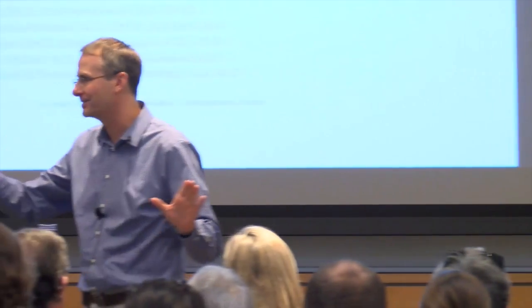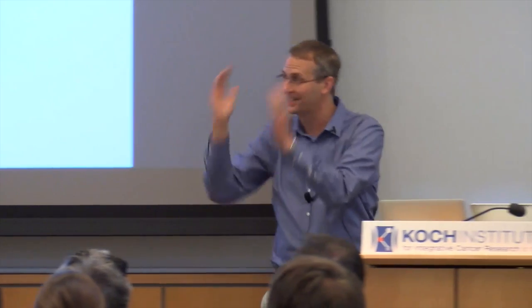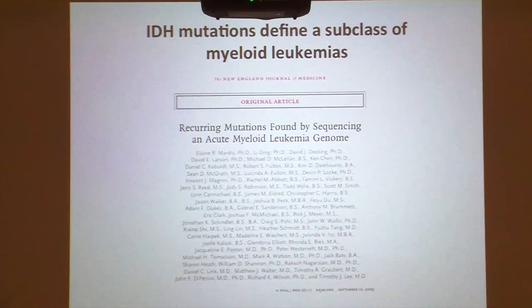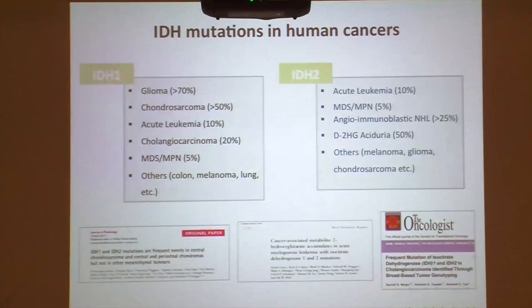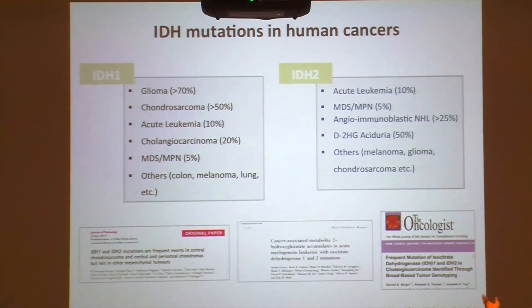The clear take-home is that this is a separate disease defined by mutational status. It was later found that this was not just glioma — it was also found in leukemia. In 2009, a group at Wash U while sequencing AML found that IDH mutations were present there as well.